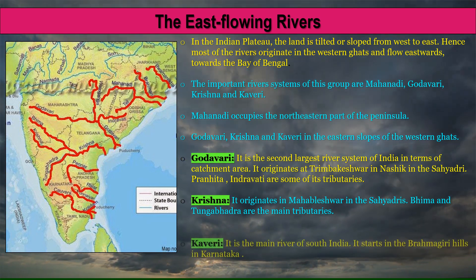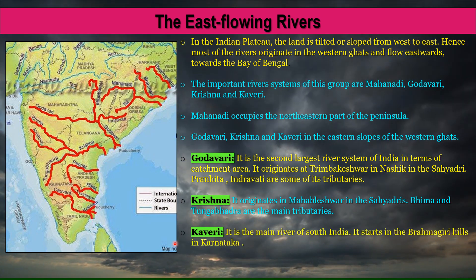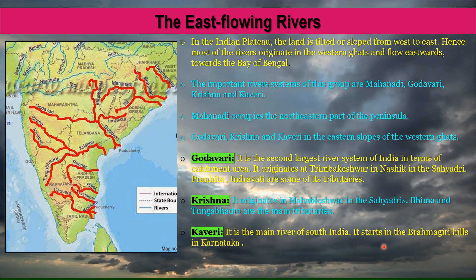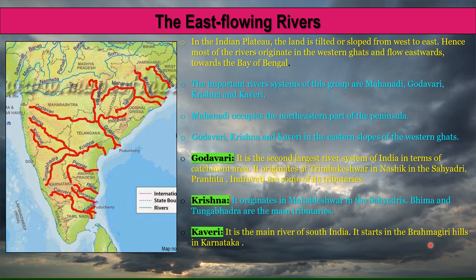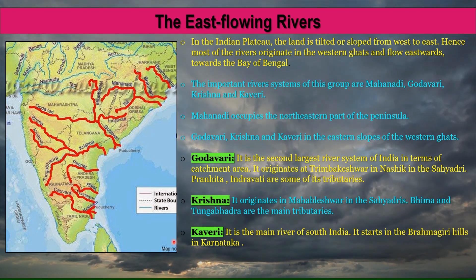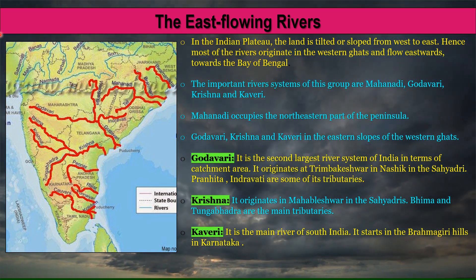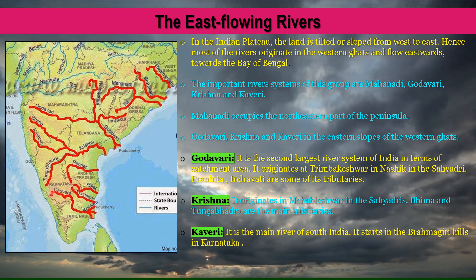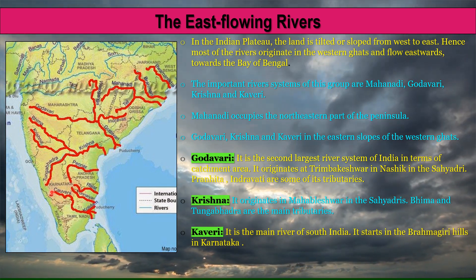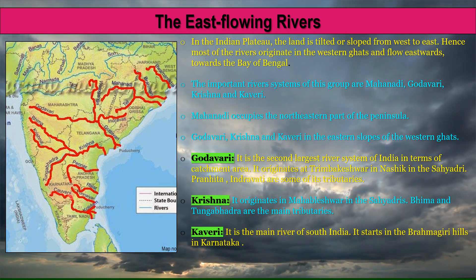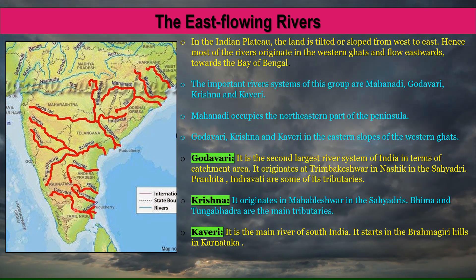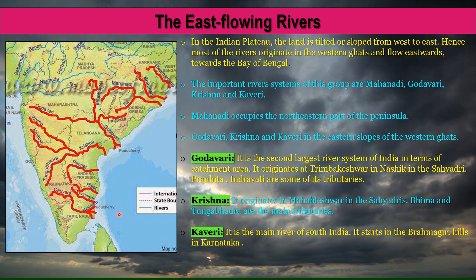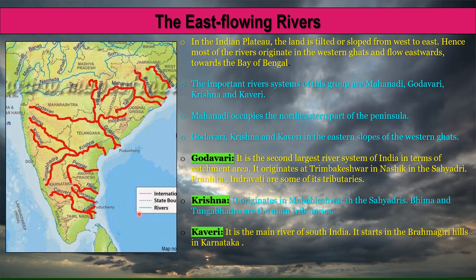The River Kaveri is the main river of South India. It starts in the Brahmagiri hills in Karnataka and flows through Tamil Nadu before emptying into the Bay of Bengal.